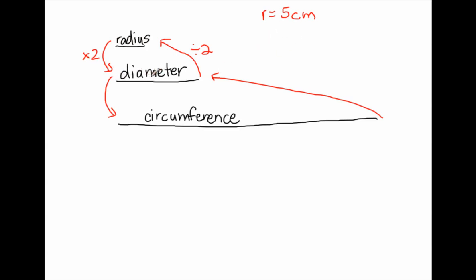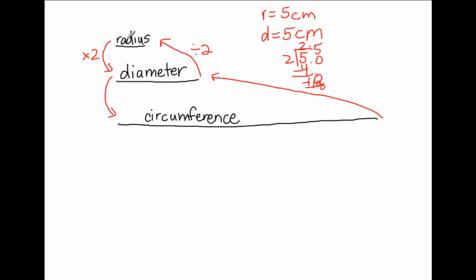And say I have a diameter of 5 centimeters — I'm going to divide that diameter by 2, and I get 2.5, as we can see right here. So if you're given the radius, multiply it by 2 to get the diameter. If you're given the diameter, divide the diameter by 2 to get the radius.